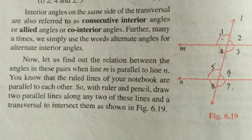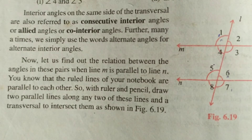Now I have taken two parallel lines and a transversal L intersecting them. When a transversal intersects two parallel lines, their corresponding angles become equal. So angle 1 equals angle 5, angle 2 equals angle 6, angle 4 equals angle 8, and angle 3 equals angle 7.